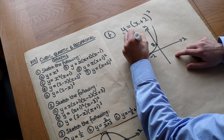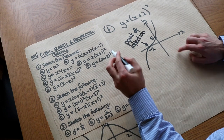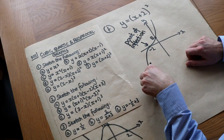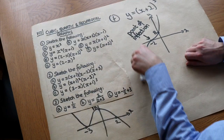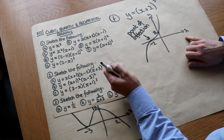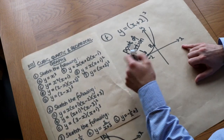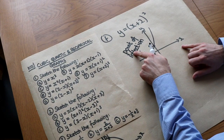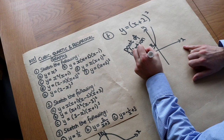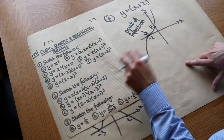A point of inflection is where the curve changes from turning right to turning left, or vice versa. In this particular case it's a stationary point of inflection because at that point the curve is actually horizontal.